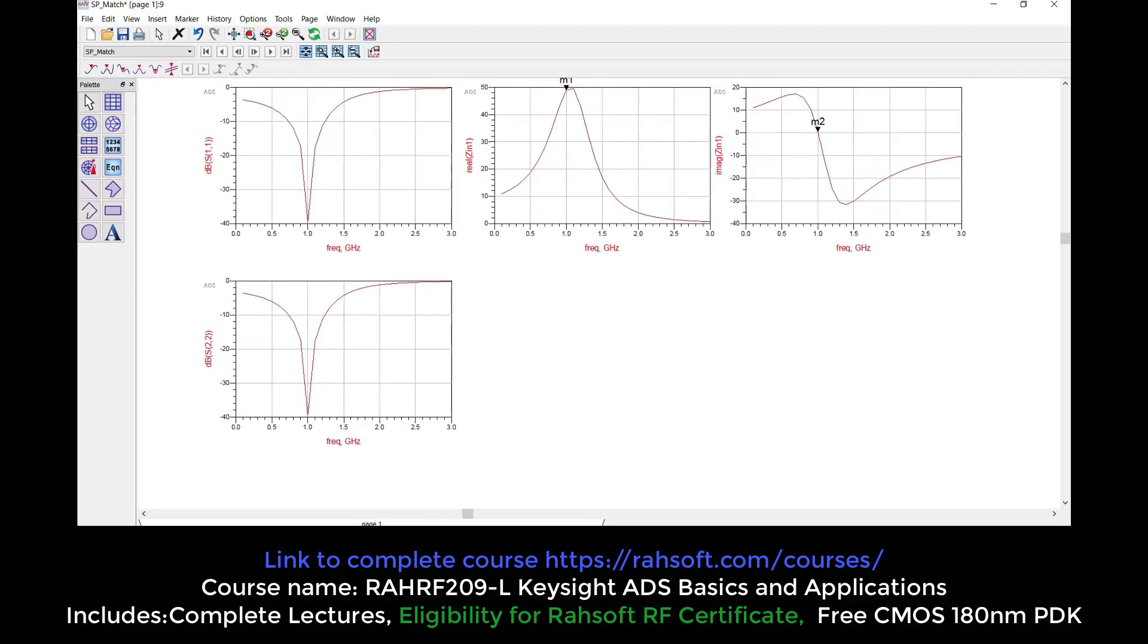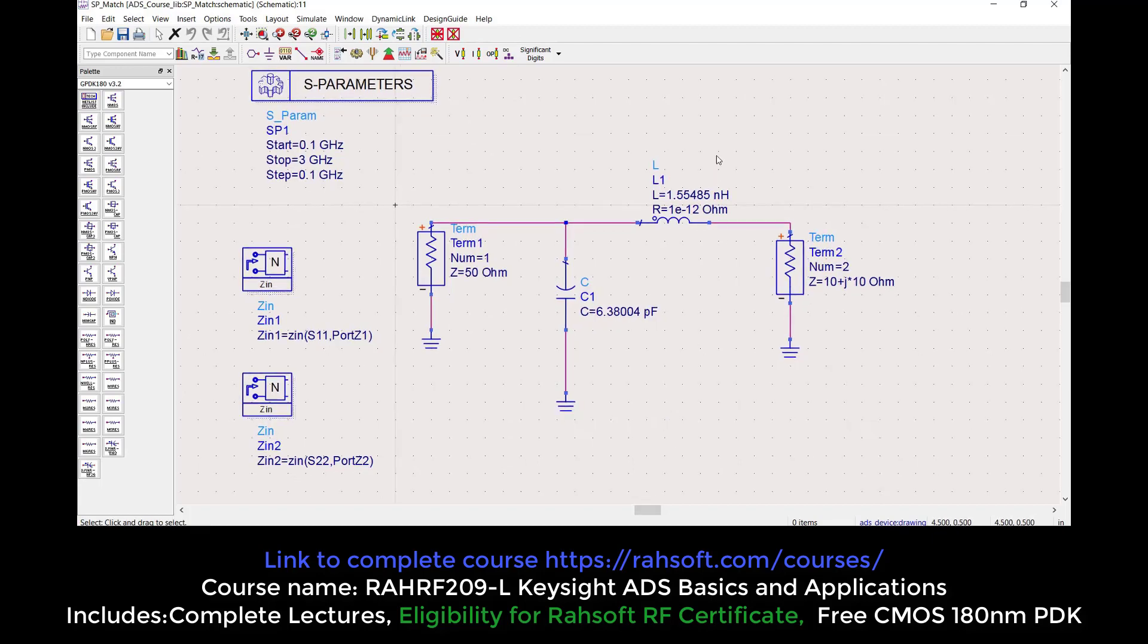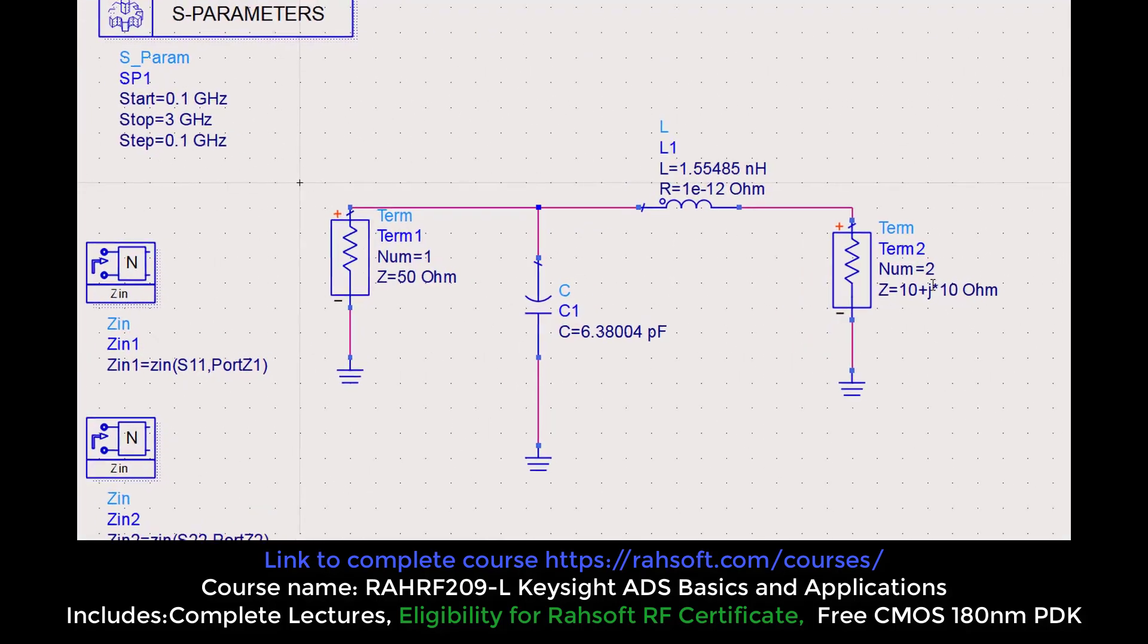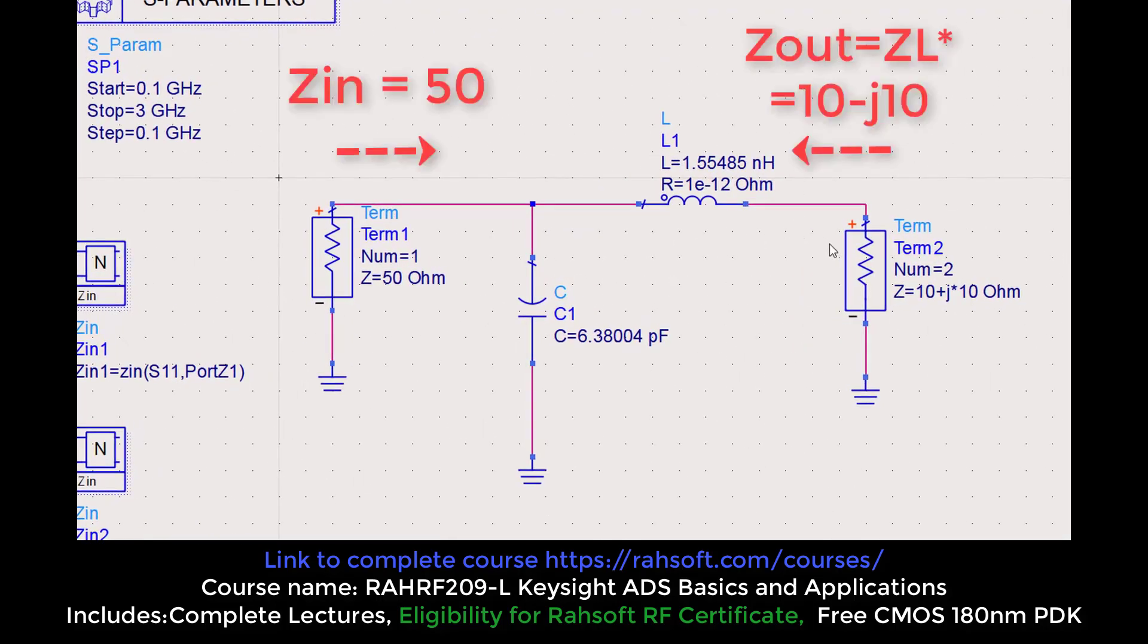Now what kind of output impedance do we expect in this circuit? Because our output is A plus BJ, we know that the output impedance should be equal to the conjugate of this load impedance. We know in matching we have to have conjugate matching. We explained in our second course in the power part that in order to match to a load, we should design a circuit which...